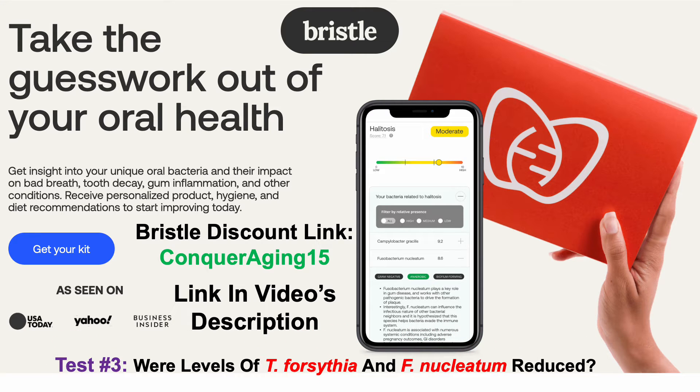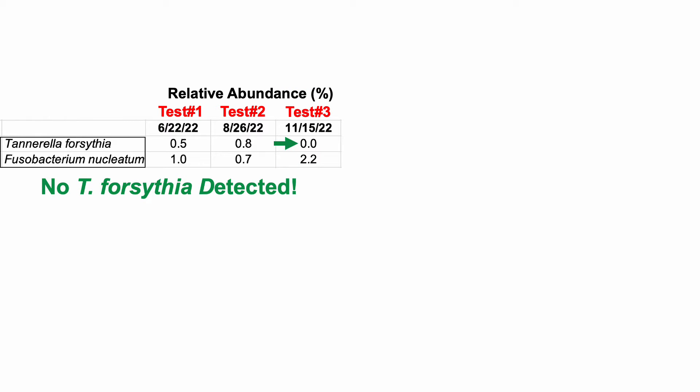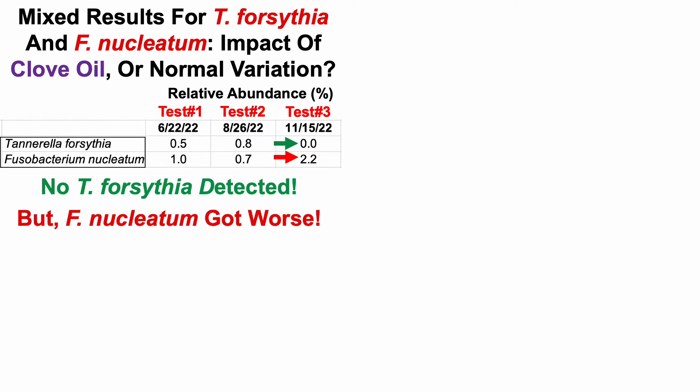On to the first question: were levels of these two bacteria reduced? We can see levels of Tannerella forsythia and Fusobacterium nucleatum on the left, with their relative abundance across test number one, two, and three. There was no Tannerella forsythia detected in test number three, which is good news. But Fusobacterium nucleatum got worse, with values of 1%, 0.7% on tests one and two, then increasing to 2.2% for test number three.